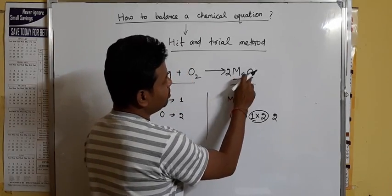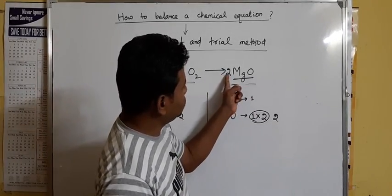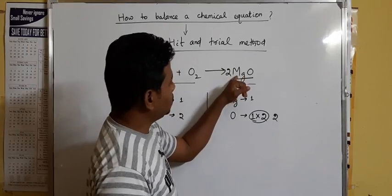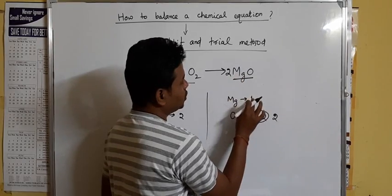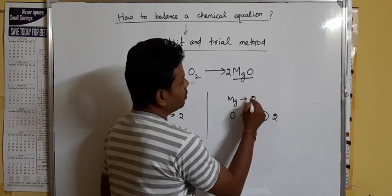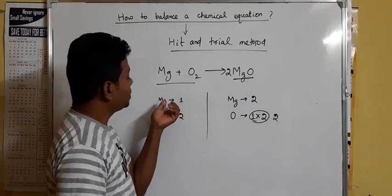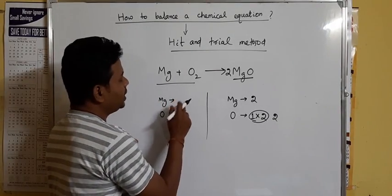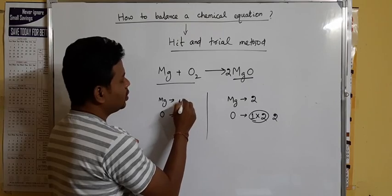Now 2 is multiplied with MgO, so oxygen becomes 2. But notice — when you multiply 2, the 2 is multiplied with both Mg and O. So the magnesium atom also becomes 2. Previously it was 1, but now in the product side magnesium becomes 2. So again, what you have to do is make the same number of magnesium atoms on the reactant side — you have to multiply 2 there as well.